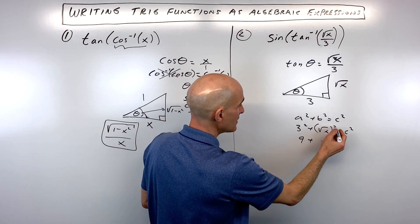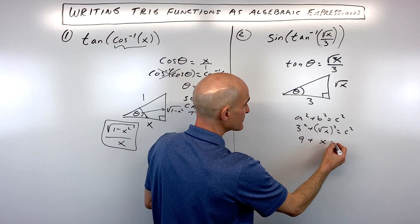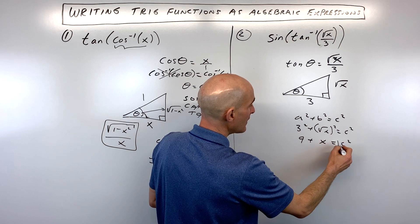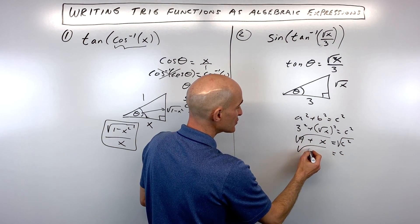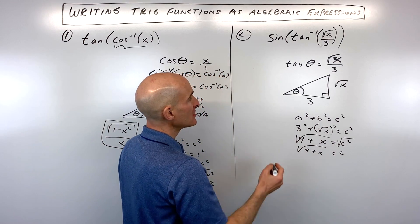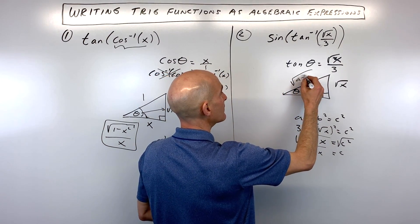So we have nine plus the square and square root those cancel. So that gives us x equals c squared. And if we take the square root of both sides, you can see that c is equal to the square root of nine plus x. So that's going to be this side right here, nine plus x.